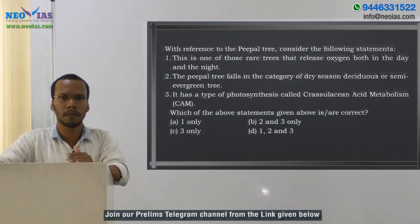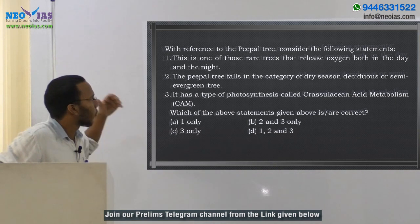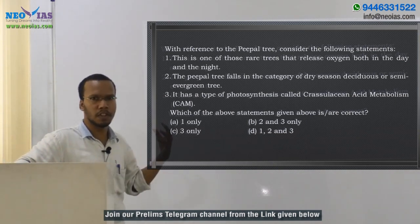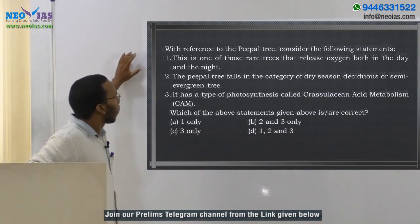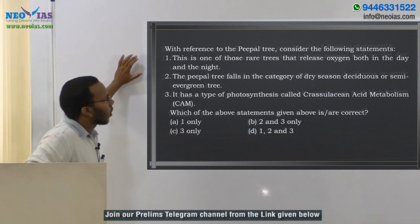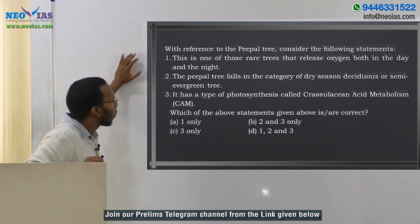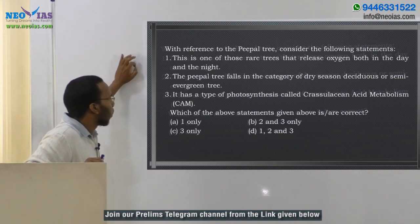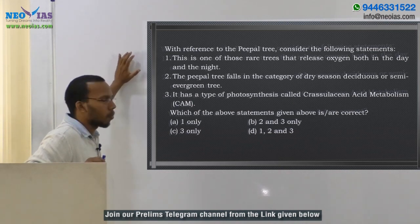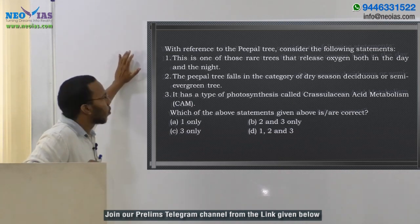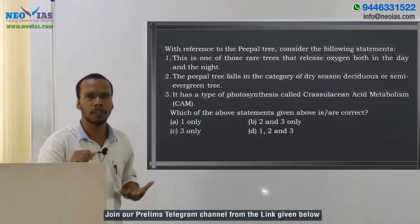This is a question from the natural vegetation part. They have given features regarding the peeple tree. With reference to the peeple tree, consider the following statements: first, it is one of those rare trees that release oxygen both in day and night; second, the peeple tree falls in the category of dry season deciduous or semi-evergreen tree; third, it has a type of photosynthesis called Crassulacean Acid Metabolism or CAM mechanism.